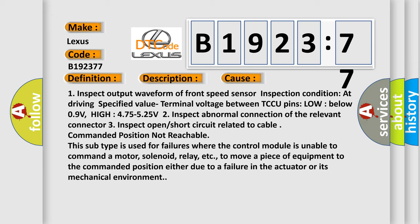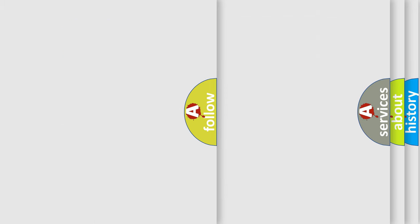Three, inspect open or short circuit related to cable commanded position not reachable. This subtype is used for failures where the control module is unable to command a motor, solenoid, relay, etc. to move a piece of equipment to the commanded position either due to a failure in the actuator or its mechanical environment.